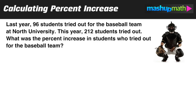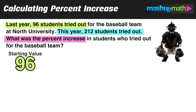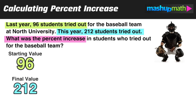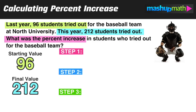Let's read through the last practice problem and identify the key information. Last year, 96 students tried out for the baseball team at North University; this year, 212 students tried out. What was the percent increase? The starting value is 96 and the final value is 212, and we'll use the same three-step method to find the percent increase.